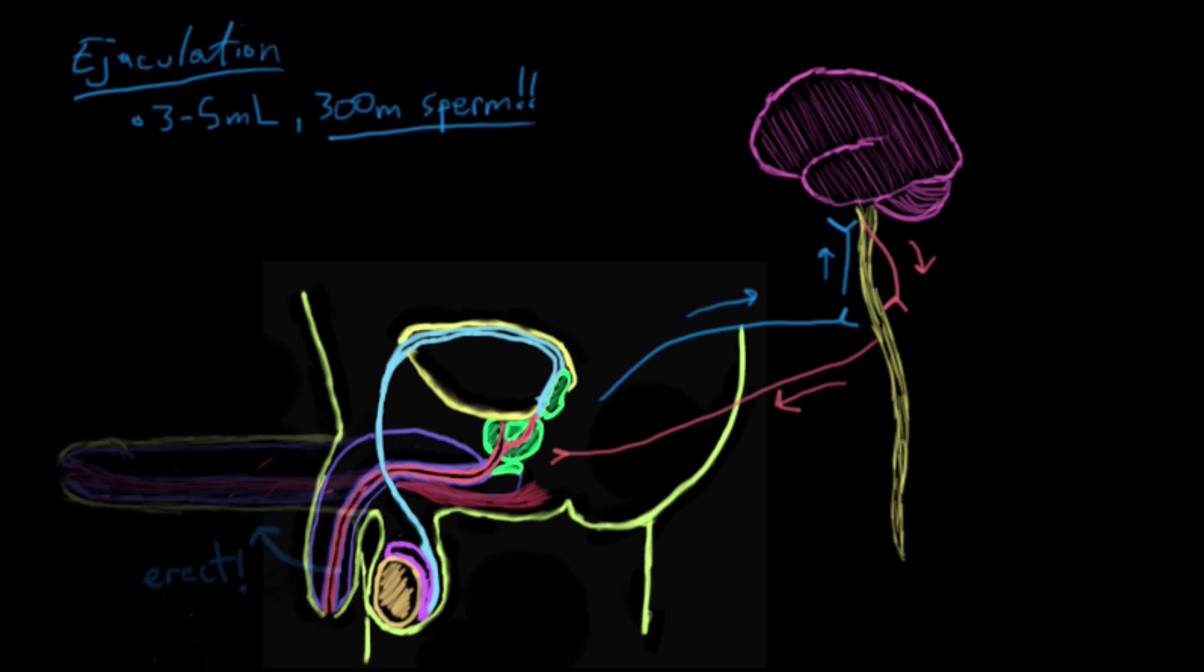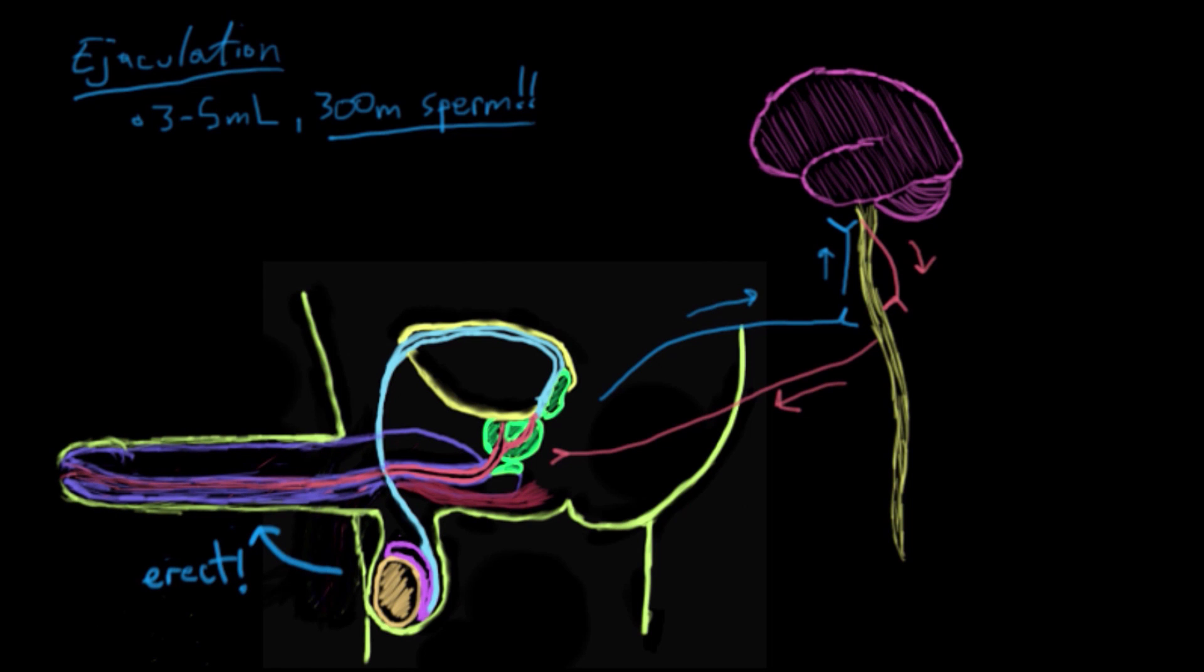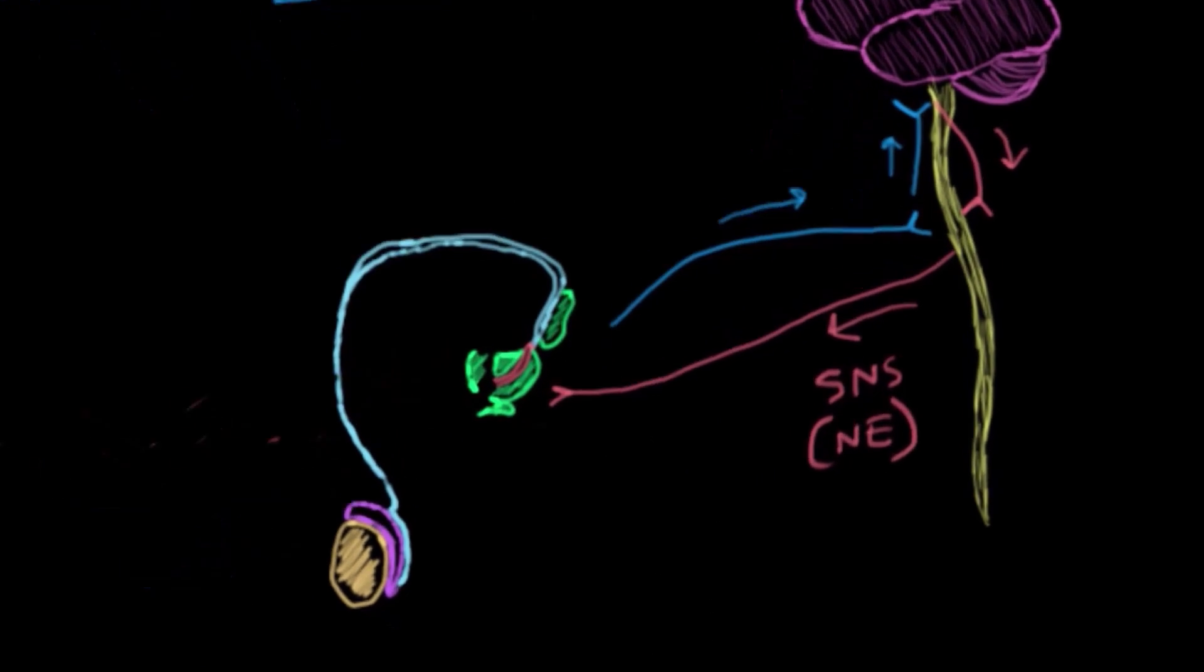We'll start with our erect penis here, because now we're sexually excited. Remember, now that we're erect, we've filled these vascular chambers here with blood. The first part is sympathetic nervous system stimulated. Remember, in red, we drew these neurons as sympathetic nervous system neurons. They're going to release norepinephrine, which I'll abbreviate as NE, onto all of the following structures.